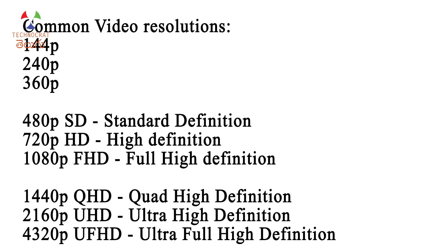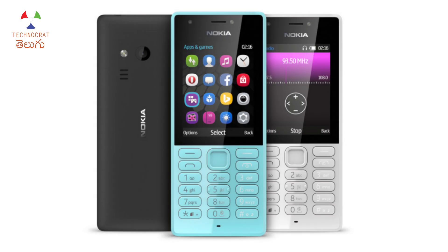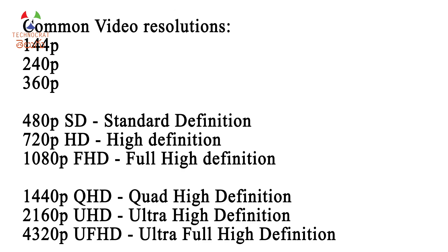Let me tell you about video resolution standards. First, there is 144p, 240p, and 360p — these are very basic resolutions used by basic cameras. Then there is 480p, which is Standard Definition. Then 720p, which is High Definition — HD. Then 1080p, which is Full HD, also called FHD.